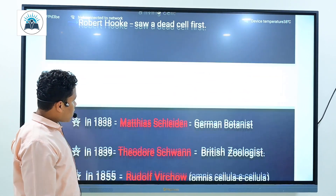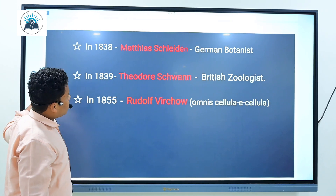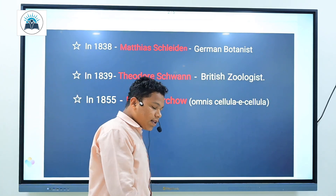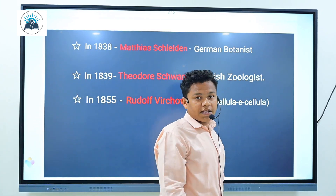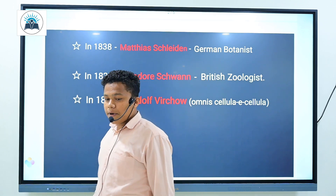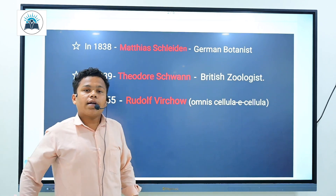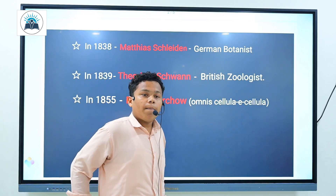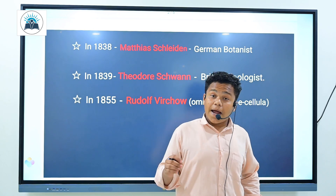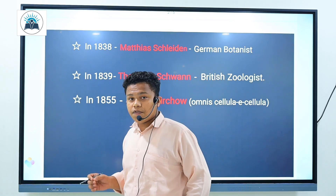Now let us come to my topic, which is Cell Theory. In the year 1838, Matthias Schleiden, a German botanist, examined different kinds of plants and concluded that the plants were composed of different kinds of cells.